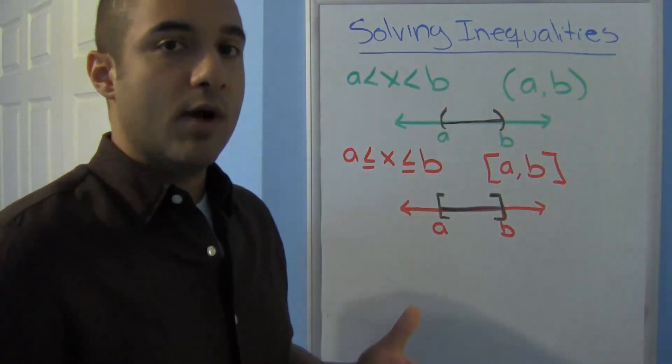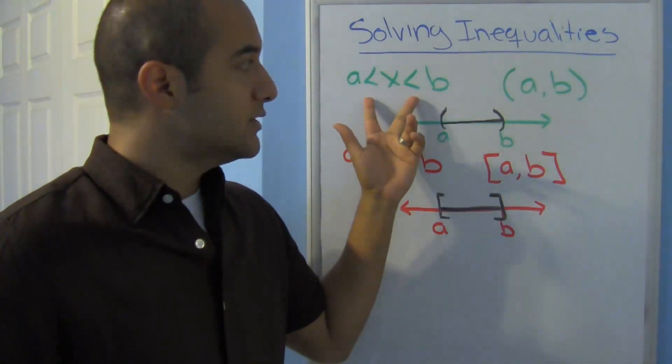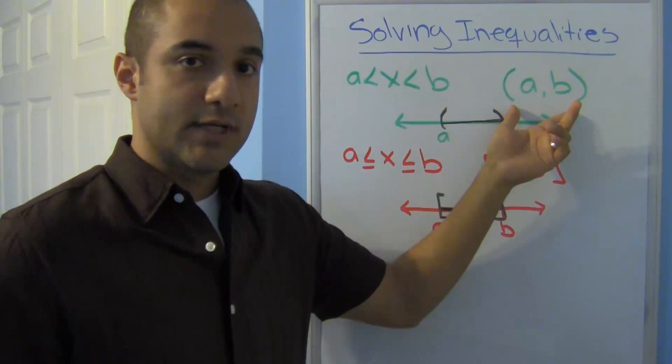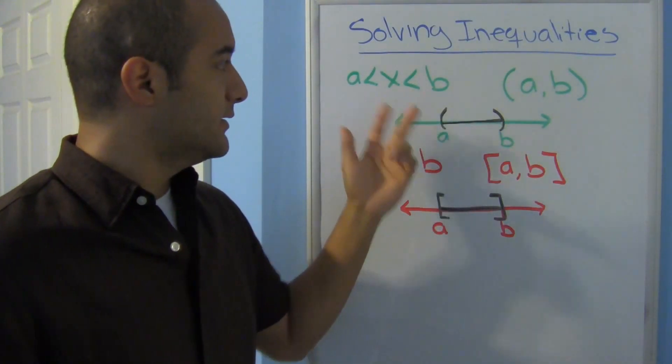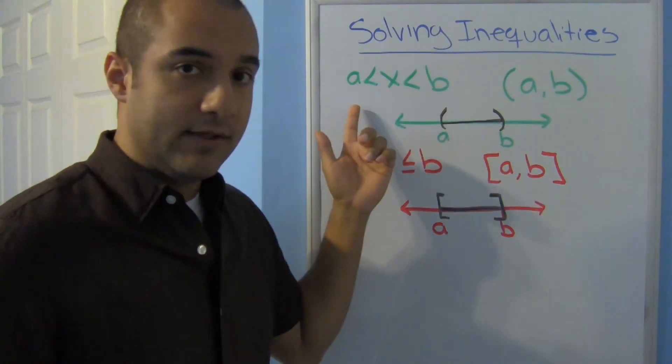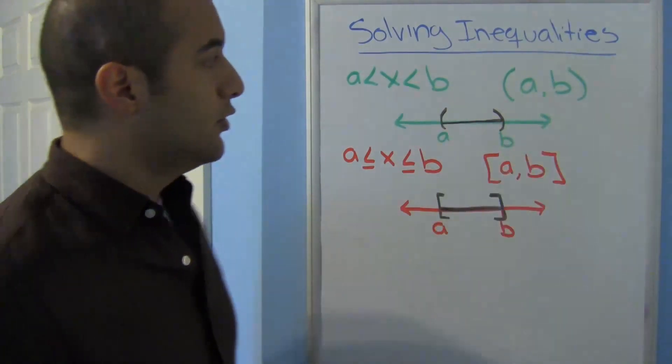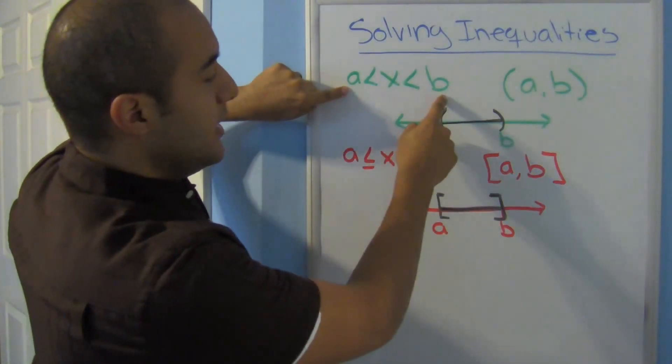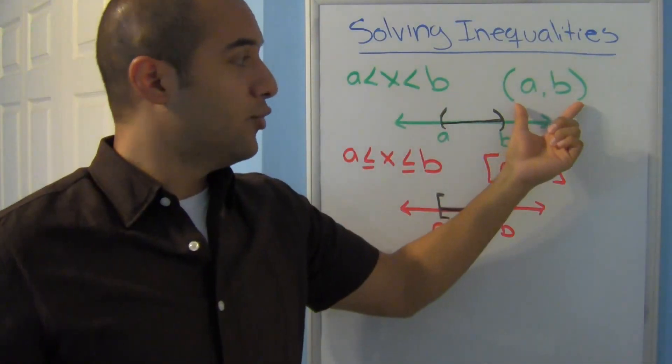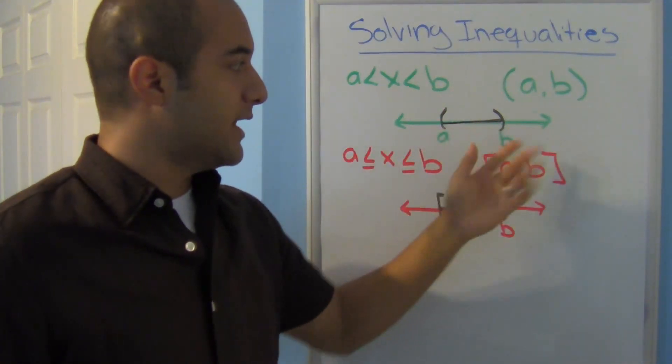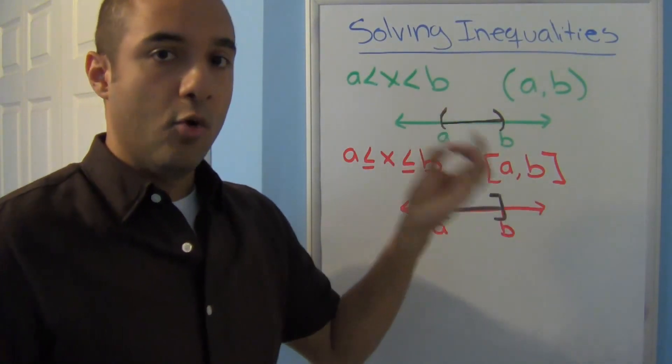Before we start solving the inequalities, let's take a look at inequality notation and interval notation. Notice that here we just have a less than sign and it does not have an equal to. When we revert to interval notation, notice that the numbers that matter between is written in parentheses, and when we graph that, notice that I use parentheses instead of the regular open circles.